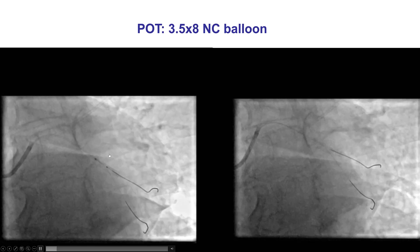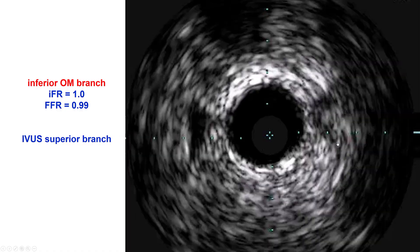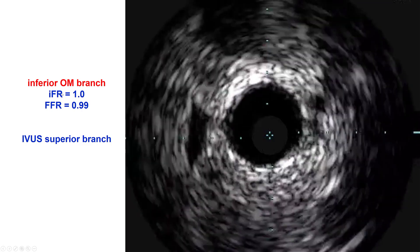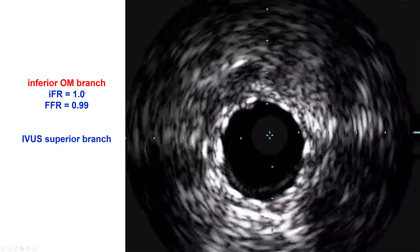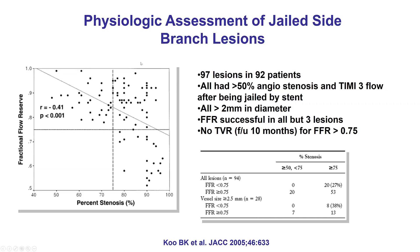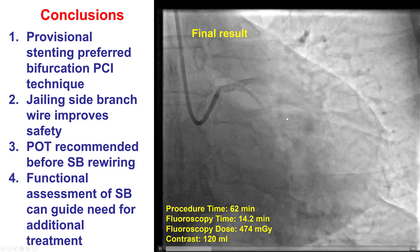To check if it is significant, we did the proximal optimization technique to ensure that the stent struts are opposed proximally. Then we did functional assessment. The IFR was 1.0 and FFR was 0.9, which means that there was no significant lesion in the inferior branch. Physiologic assessment is very useful. It has been 15 years since the classic paper by Koo showing that if the FFR is more than 0.75 in the side branch after provisional bifurcation stenting, there is essentially zero risk of TVR over the ensuing 10 months. In this particular patient, we left the inferior branch alone, and a nice final result was achieved.